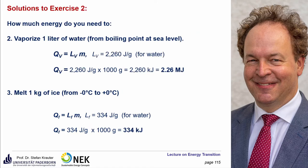Let's apply this. The question was: how much energy do you need to vaporize one liter of water from boiling point at sea level, which is 100 degrees Celsius? We apply the vaporization formula: QV equals LV times M, where LV is 2,260 joule per gram. Putting in the numbers gives 2,260 kilojoule or 2.26 megajoule. To melt one kilogram of ice at zero degrees Celsius: QF equals LF times M, where LF is 334 joule per gram, giving 334 kilojoule.